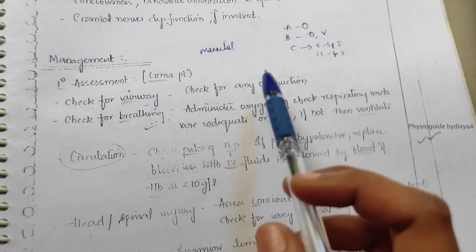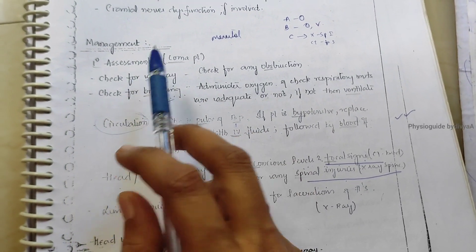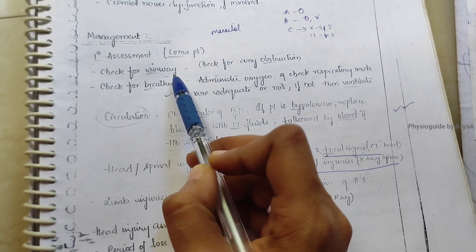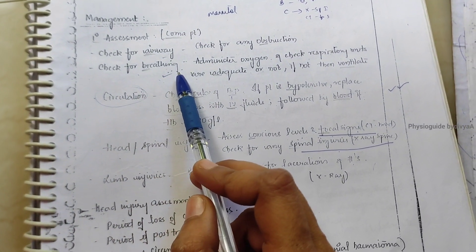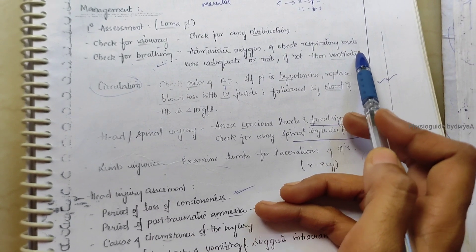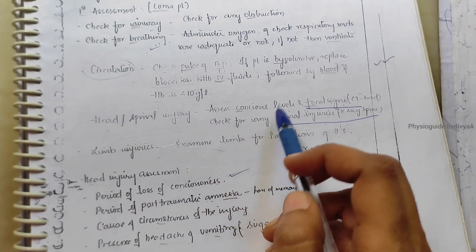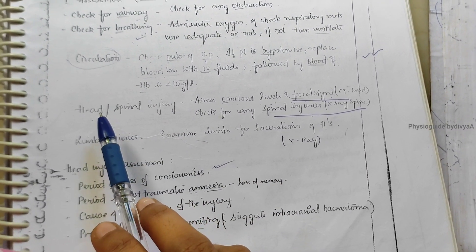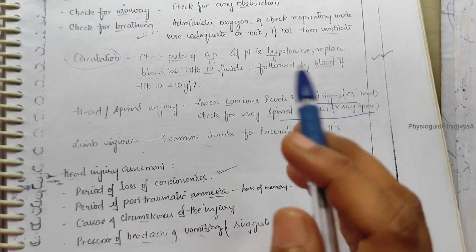Management - firstly we need to assess the condition. Check for airways, proper breathing, respiratory movements, circulation, and blood pressure. These all need to be maintained.